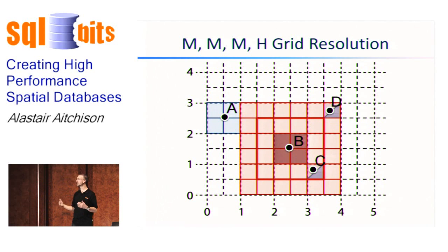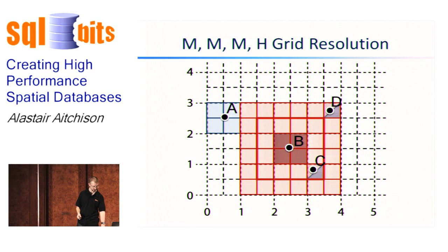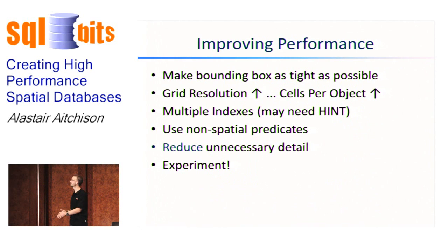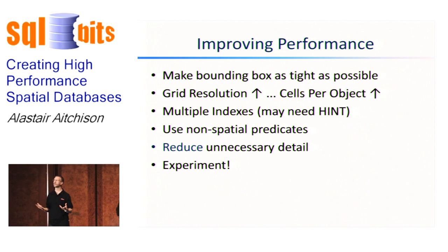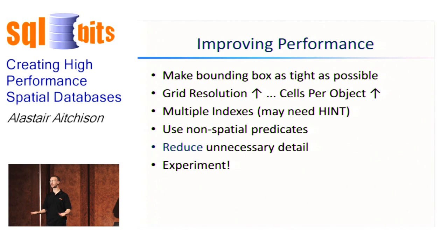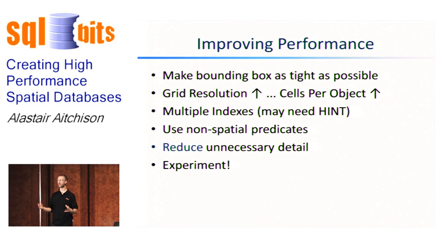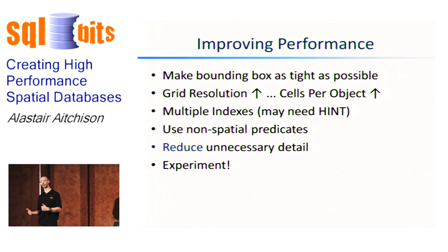So bear in mind not just what's in your table, but also the sort of queries running against it. Practical tip: make the bounding box as tight as possible. If you shrink the bounding box to fit very tightly over your table of data, each individual grid cell will be smaller and more accurate. However, don't make your bounding box so small that data lies outside it — because then it won't be included in your index at all, and you can't get the primary filter on that data.